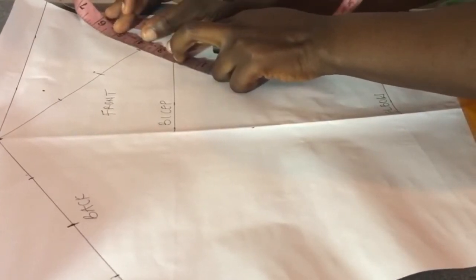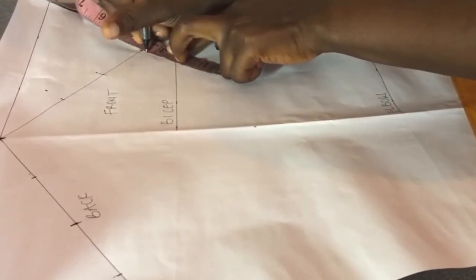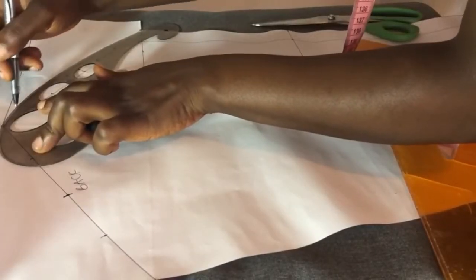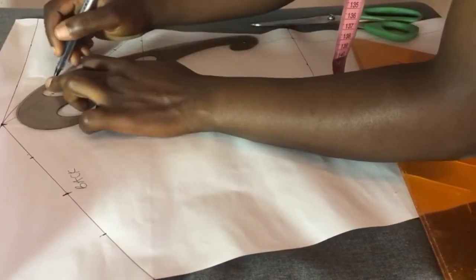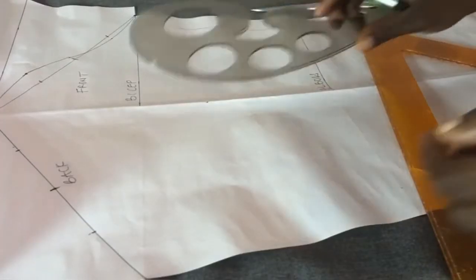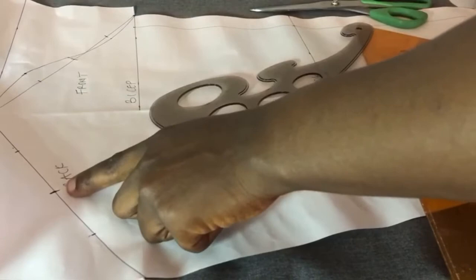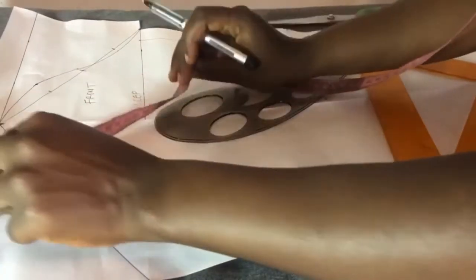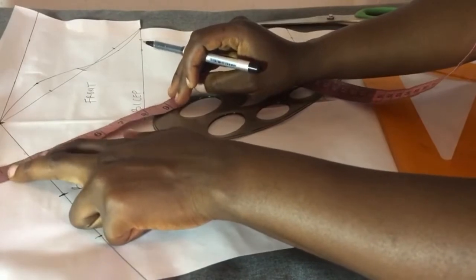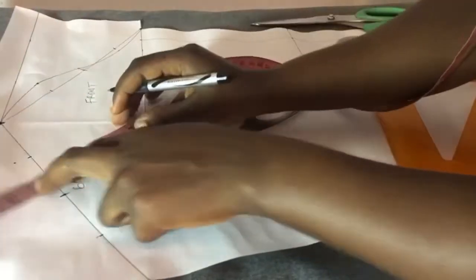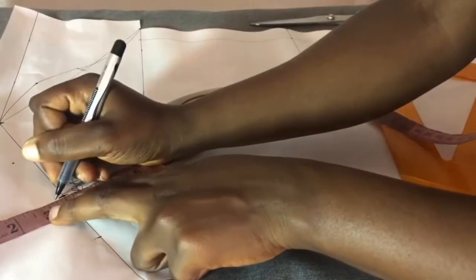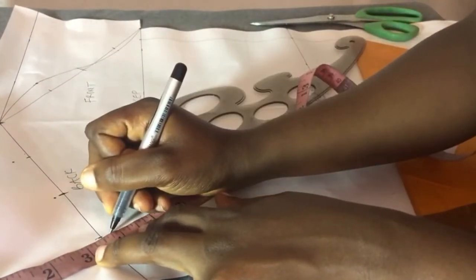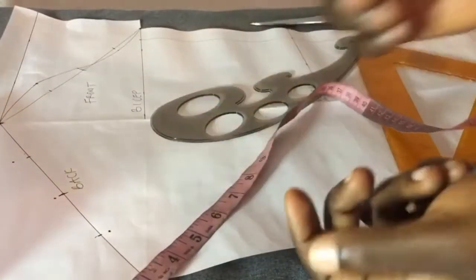So now let's come back to this back line. From here I'll be going up by 0.5 inch. Then here I'll be coming up by 0.25, and here I'll be coming down by 0.25. And connect the lines together.